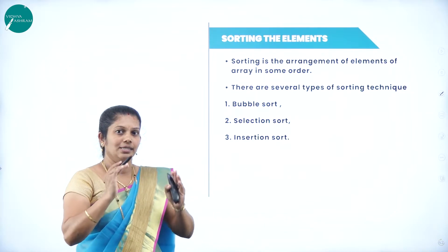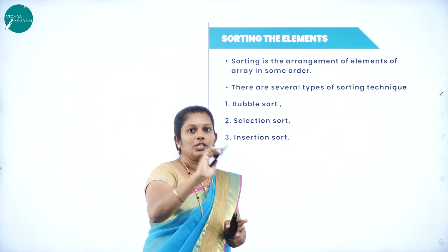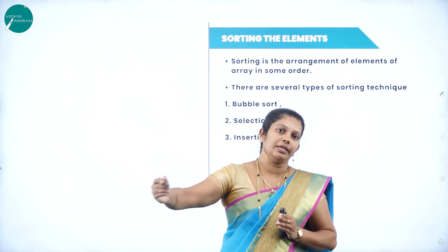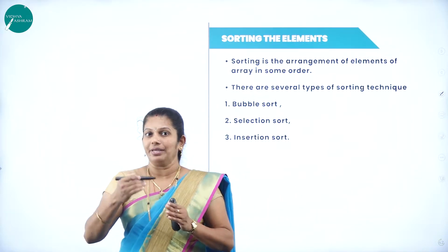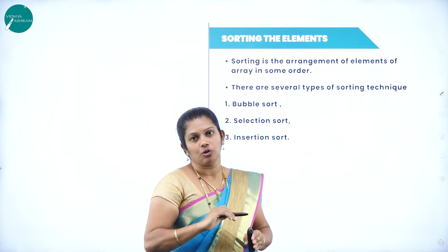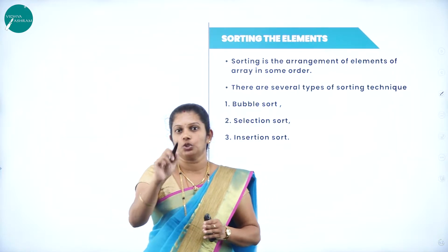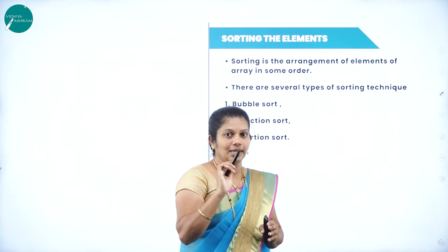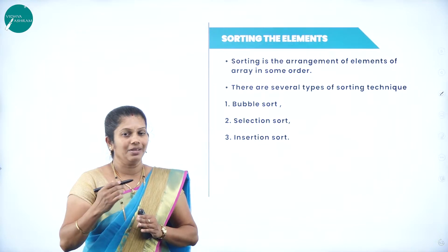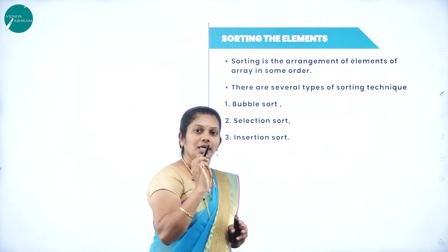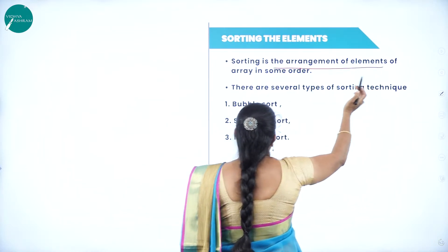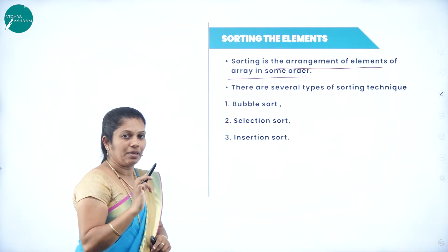Sorting may be in increasing order or decreasing order — ascending or descending. Consider in a classroom with several students, where each student is one array element. We can traverse all students from beginning to end, insert a new student, delete a student we don't want, search for which student talks in between class, and sort students by height or marks. Sorting is the arrangement of elements of the array in some order, whether increasing or decreasing.